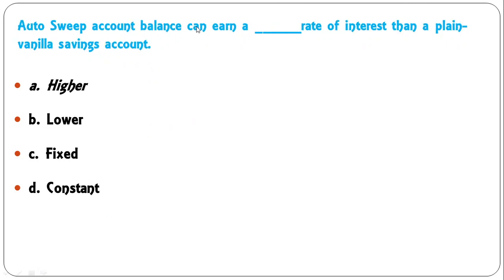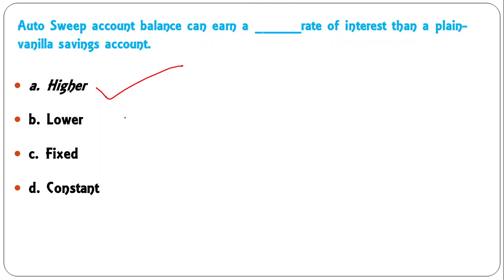Auto sweep account balance can earn a — higher, lower, fixed, or constant — rate of interest than a plain vanilla saving account? Usually, auto sweep account balance can earn a higher rate of interest than the plain saving account. So A is the correct answer.